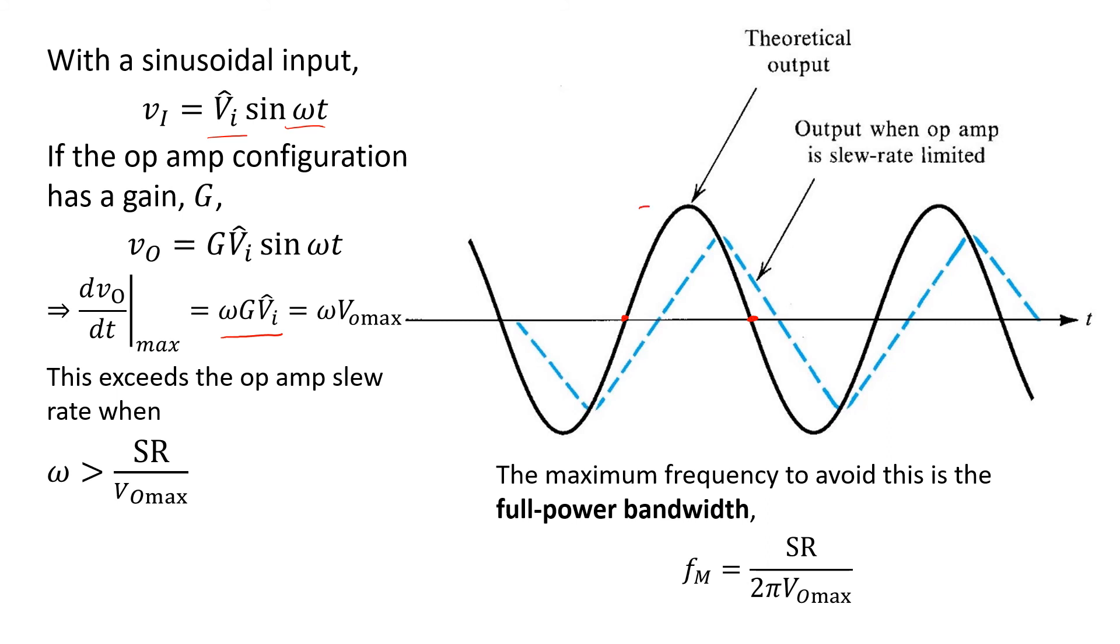That is, if the op-amp circuit is operating properly, it should be producing an output sinusoid with a peak value equal to VO max. And in such a case, the maximum slope at the output is omega, the frequency of the sinusoid, times VO max. Now, if VO max or the input frequency is large enough, then this value will exceed the slew rate limit of the op-amp. In such a case, the op-amp will be unable to faithfully reproduce the sinusoidal waveform.